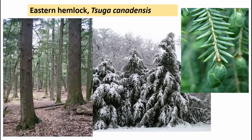Eastern hemlock has a very restricted native range in Indiana but is planted in quite a few locations. It has single needles attached to the twig and very small cones. It gets to be quite a large tree with very dark, rough bark. It also has very limber limbs that tend to droop quite a bit, particularly in snow events.